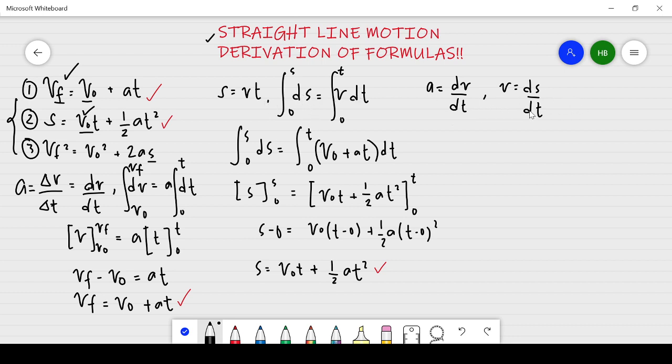We are going to equate both dt. This will become dv over a is equal to dt. And this one, dt is equal to ds over v. Equating both dt, dv over a is equal to ds over v. Cross multiply, you'll have v dv is equal to a ds.